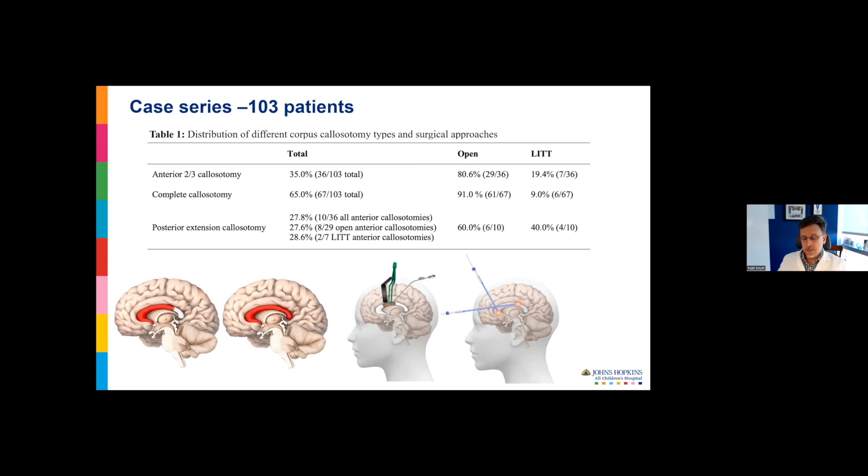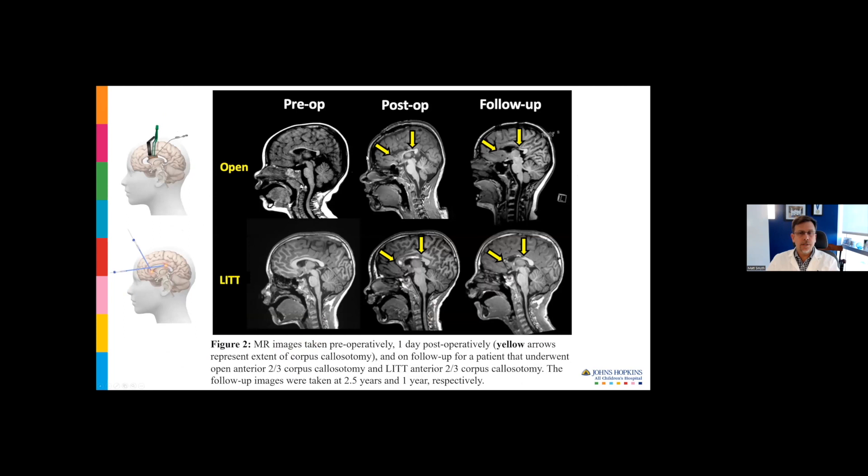There's no pain, blood loss is none, and length of stay is a little shorter than open callosotomy. In the last five minutes, I'll summarize our experience in our first hundred plus patients getting callosotomy. This is unpublished data submitted to Epilepsia. This is the distribution of different callosotomy types and approaches in the whole cohort. Of those that had open, it was about 80% versus 20% lit for anterior two thirds. If we're doing a complete callosotomy, it's about 90% open and 10% lit because we started using lit for complete callosotomies more recently.